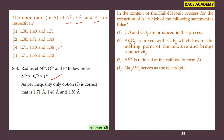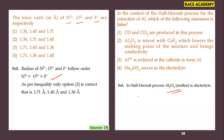Regarding the Hall-Heroult process for extraction of aluminum, which statement is false? Alumina (Al₂O₃) is mixed with cryolite (Na₃AlF₆) to lower the melting point and increase conductivity. The aluminum ion is reduced at the cathode to form aluminum. The false statement is that Na₃AlF₆ serves as the electrolyte — in fact, Al₂O₃ is the electrolyte. So the fourth option is the right answer.